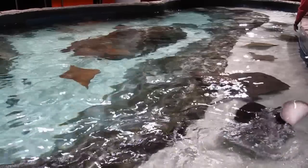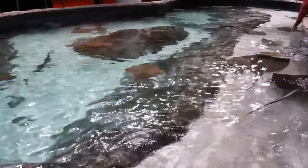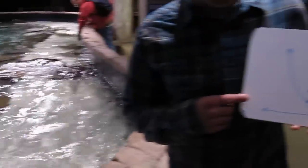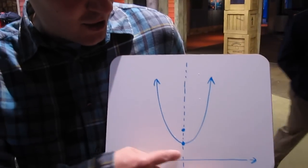In this pool we have cow nose rays and southern stingrays. And over here we have a parabola. Now a parabola has this U shape.